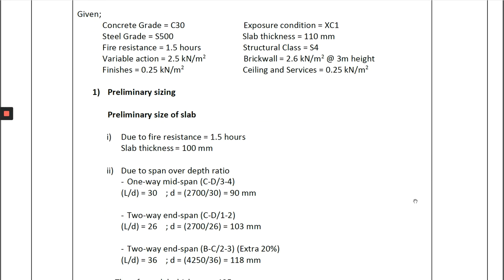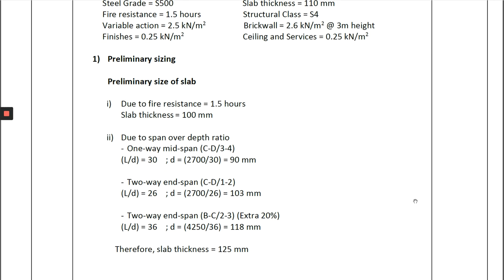The first step is we have to do the preliminary sizing of the structural elements, which are the slab and also the beam. Because as a structural engineer, the size of the element is not provided. From the architecture plan that we receive, we have to prepare the structural layout plan and calculate the preliminary sizing to determine the slab thickness, the size of the beam, and so on. Here are the methods I normally use to determine the size of the element.